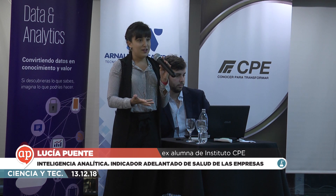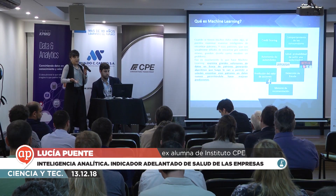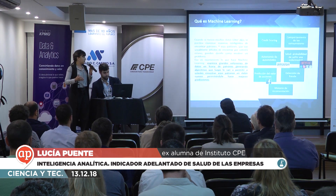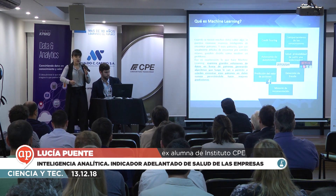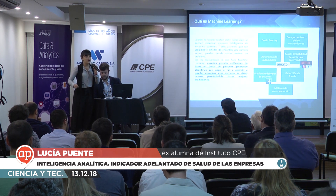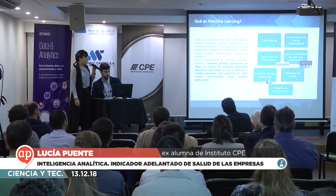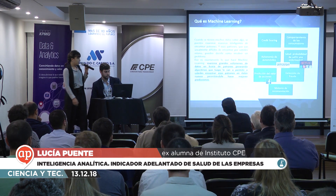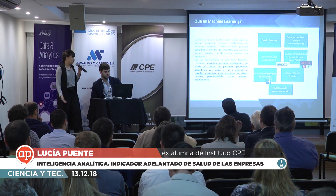En nuestro caso, lo que queríamos era hacer predicciones con una base que tenía cerca de 44.000 registros. ¿Qué cosas usan Machine Learning? Modelos de credit scoring, todo lo que ustedes ven de sugerencias de qué película querés ver mañana, predicción del valor de las acciones, motores de recomendación, detección de fraude, un montón de cosas.